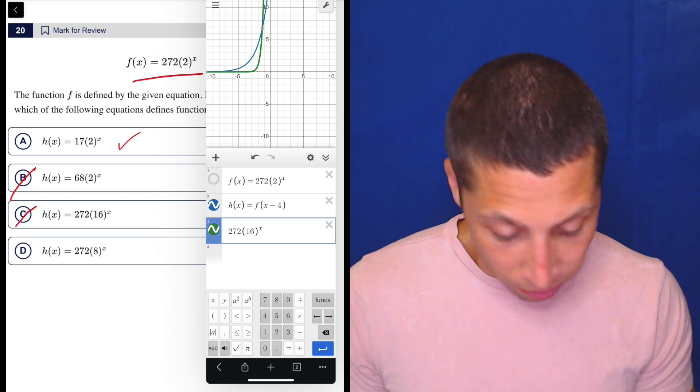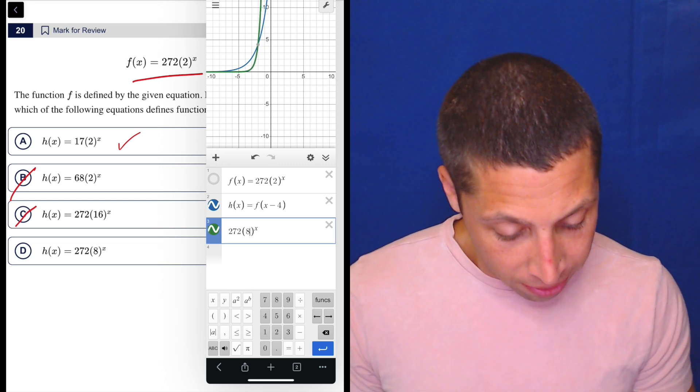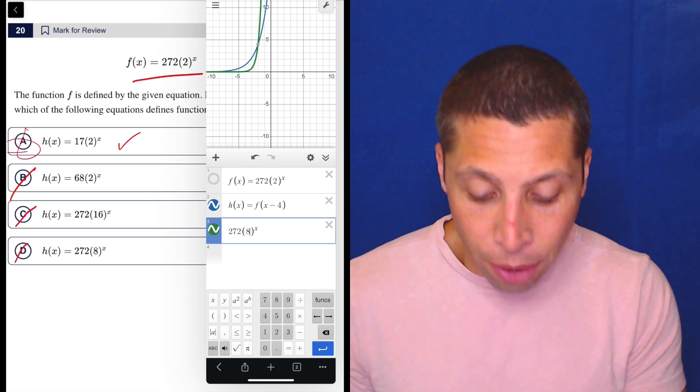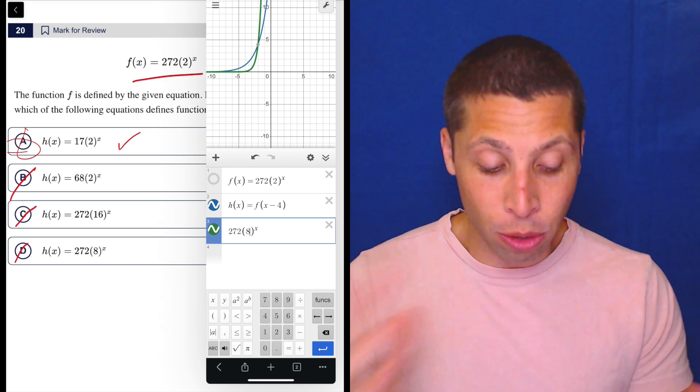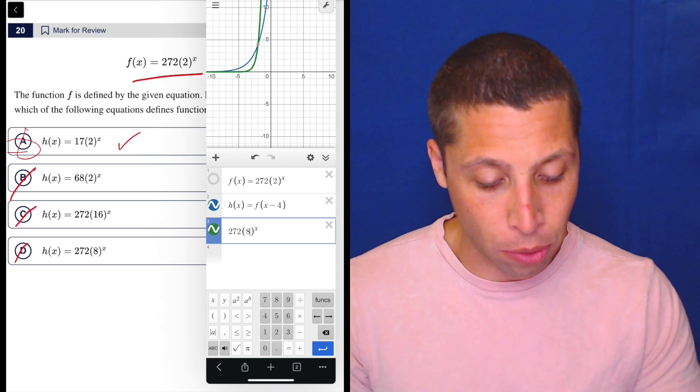It's completely different. And then 272 times 8 to the x, again, completely different. No doubt, no doubt in my mind that it's A, right? And I don't have to think really hard, just plug it in, do exactly what I was told in the instructions, and we're good to go.